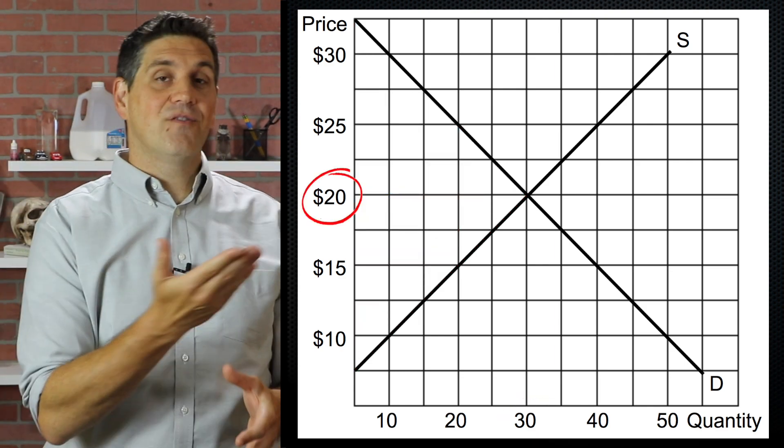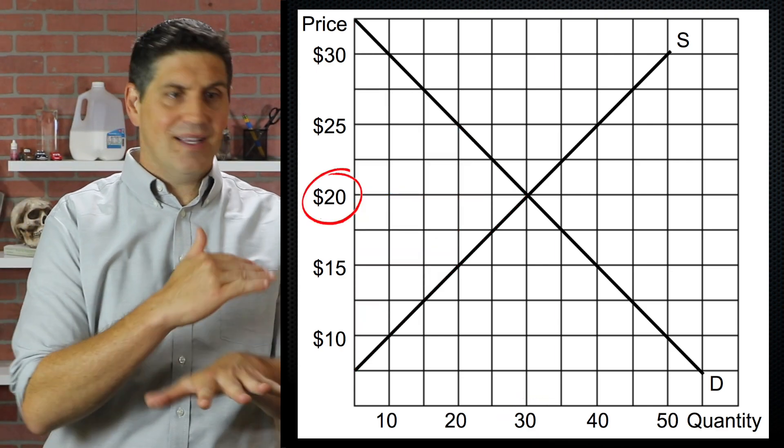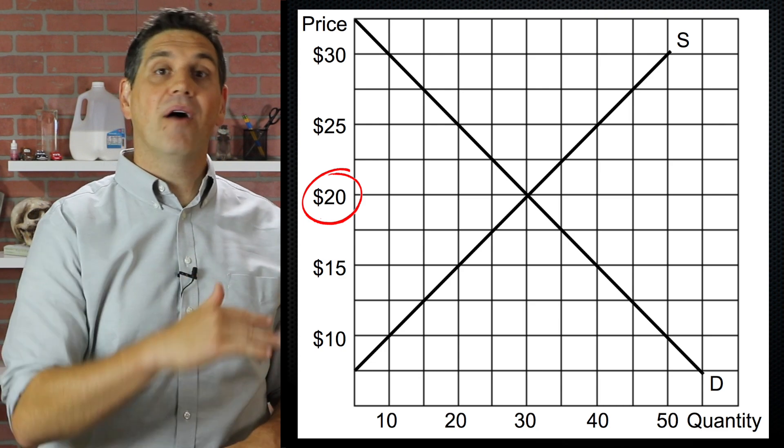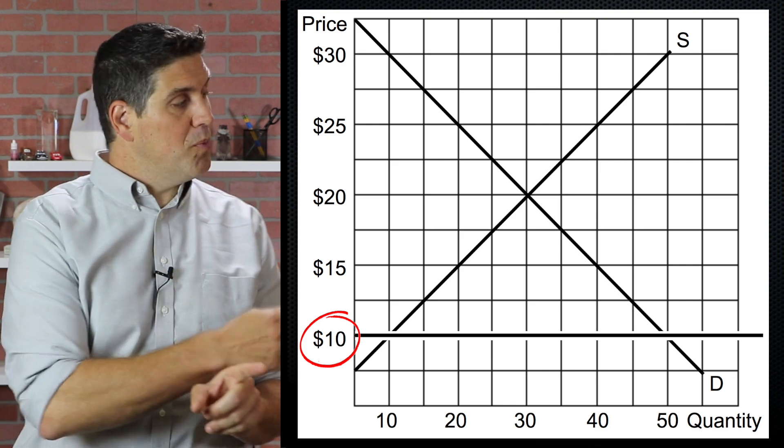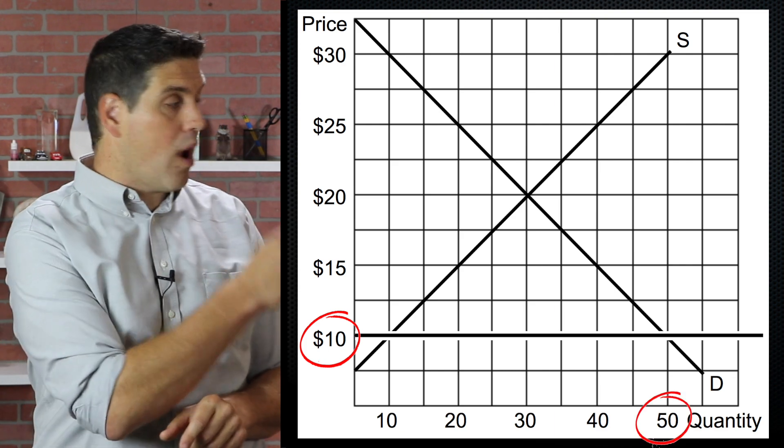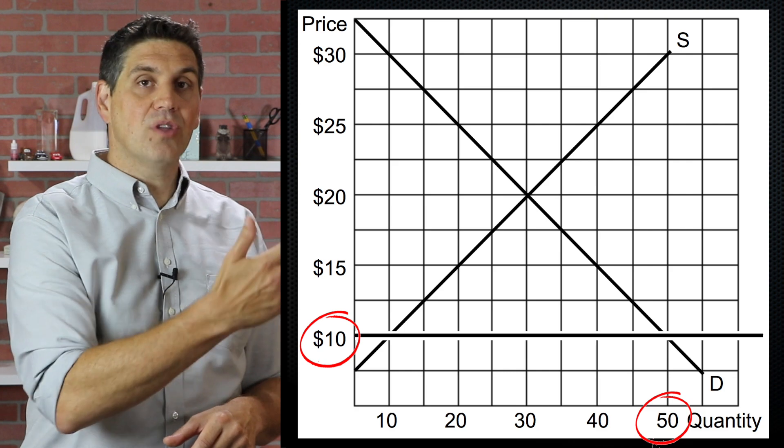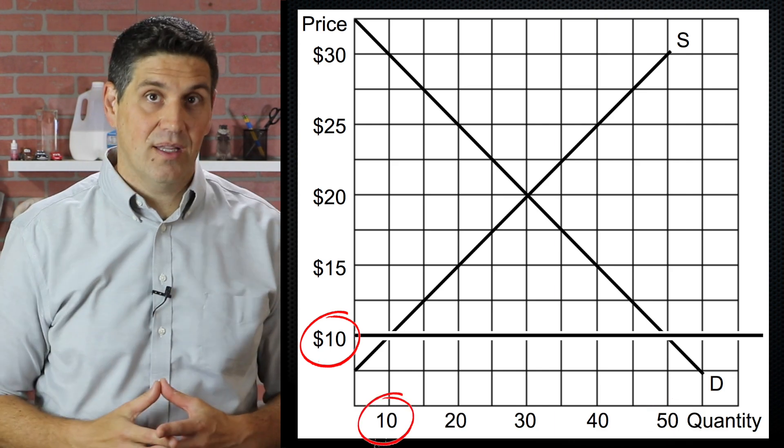If the equilibrium price of chickens is $20, but the government says you can't raise the price of chickens above $10, the result is going to be a shortage. At a $10 price, consumers want to buy 50 million chickens. That's the quantity demanded, but producers have no incentive to produce them, so they're only going to produce 10 million chickens.